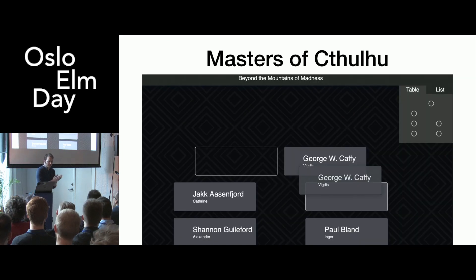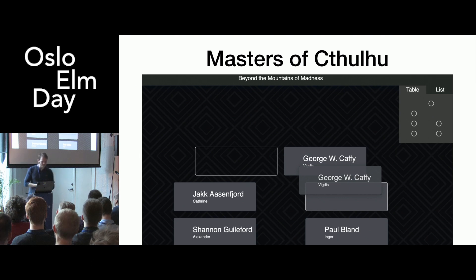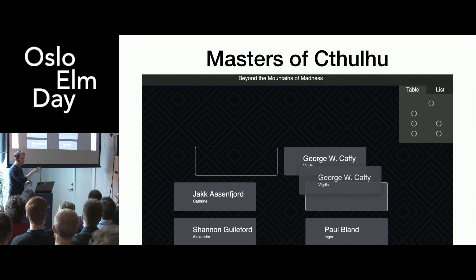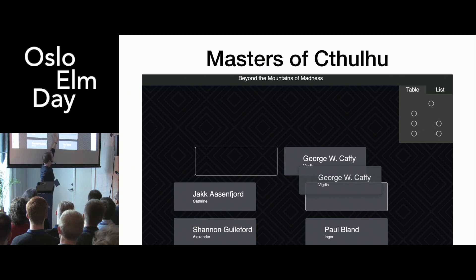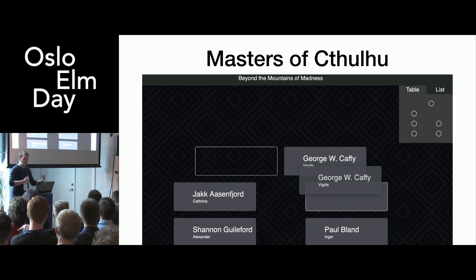Moving on — this is another hobby project of mine. There are a couple of people in the room who know that I'm a board game and role-playing game nerd. Every once in a while I invite friends over to play a role-playing game, and I wrote this application to help me keep track of which friend is playing which character. The application lets me order characters based on where they're sitting around the table. To my left, Alexander will be sitting playing Shannon; to the top right, Vigdis is playing George V. Caffey. There's also a mini-map so I can easily switch between them. And since they might not sit in the same location every time we play, I need to be able to drag and drop them around.